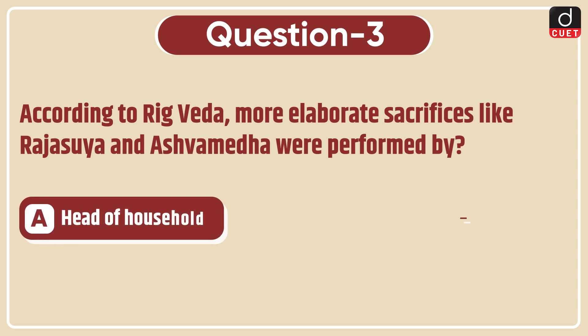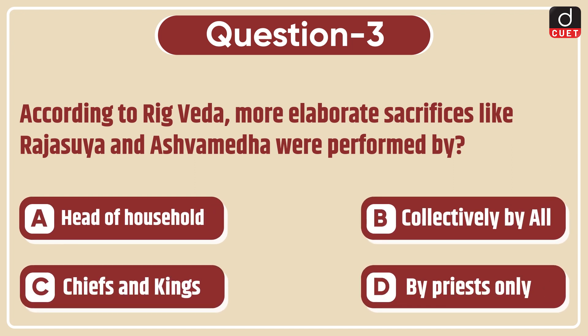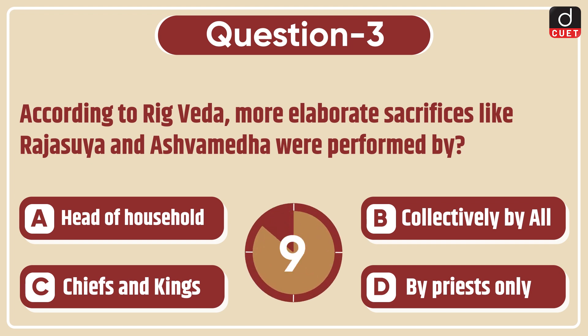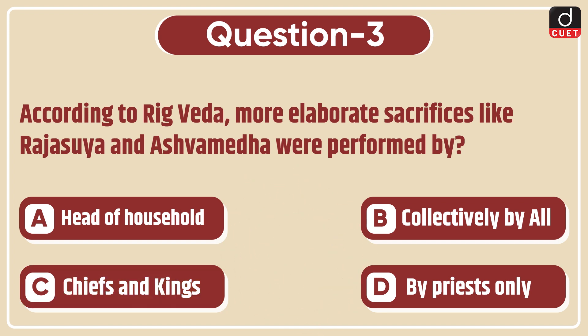Next question: According to the Rig Veda, more elaborate sacrifices like Rajasuya and Ashwamedha were performed by — the head of household, collectively by all, chiefs and kings, or by priests only? The correct answer is option C, Chiefs and Kings.